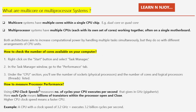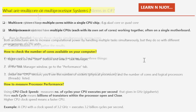Now, the question arises: how to measure processor performance? It's all about CPU clock speeds. CPU clock speed measures the number of cycles executed per second in gigahertz — the higher, the faster. For example, a CPU with a clock speed of 3.1 GHz executes 3.2 billion cycles per second. Each cycle means billions of transistors within the processor opening and closing.